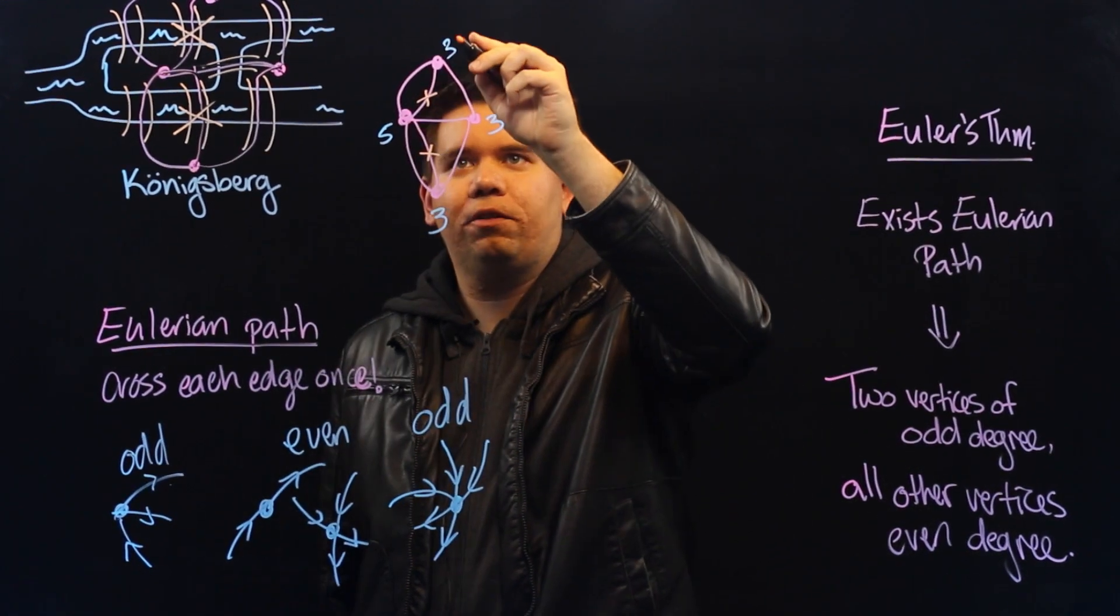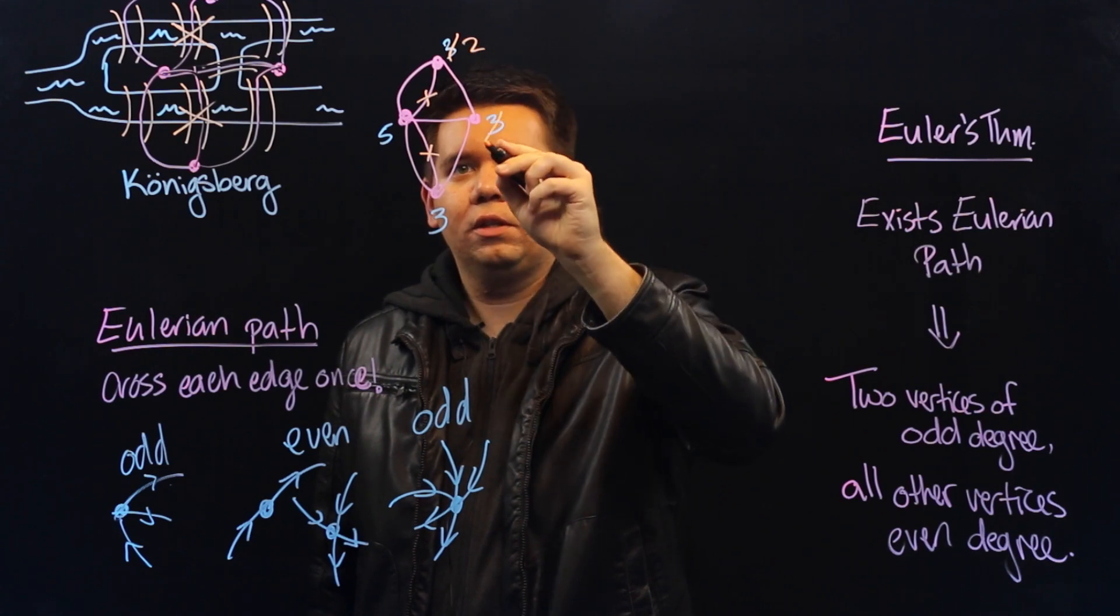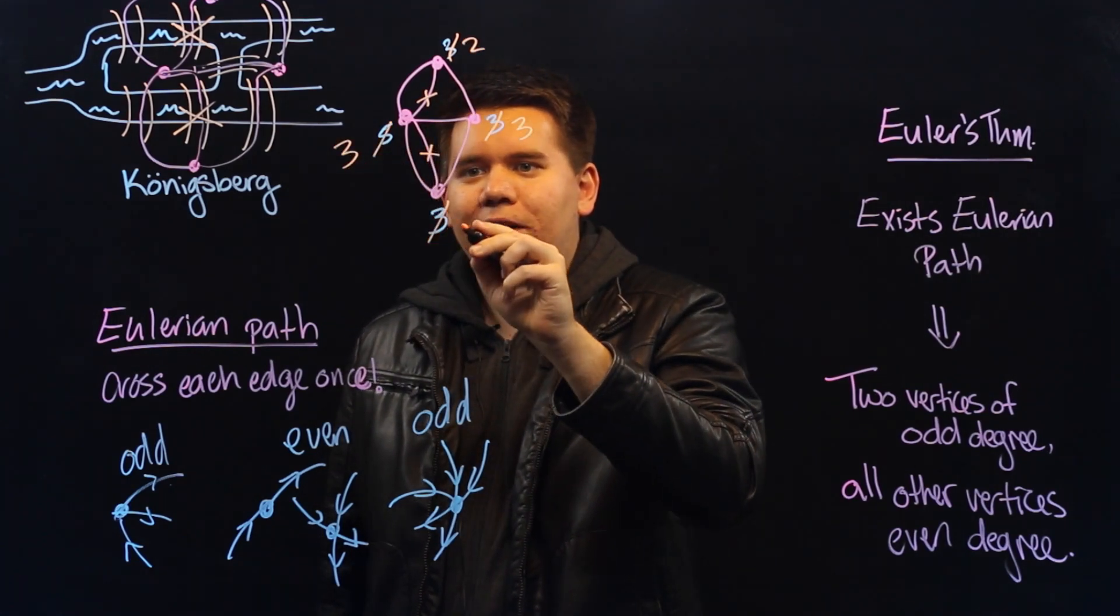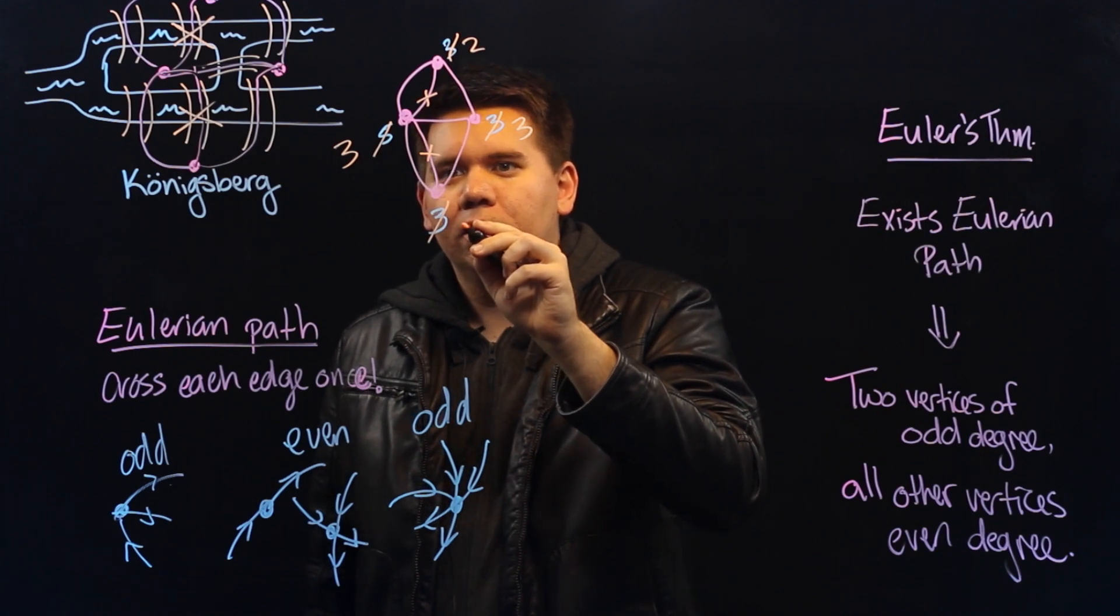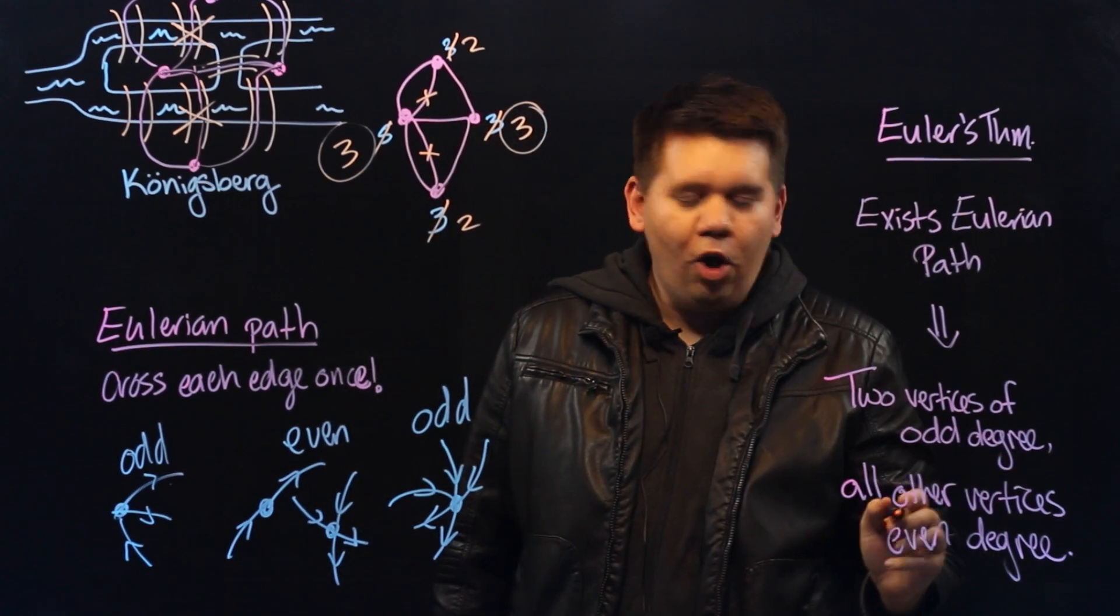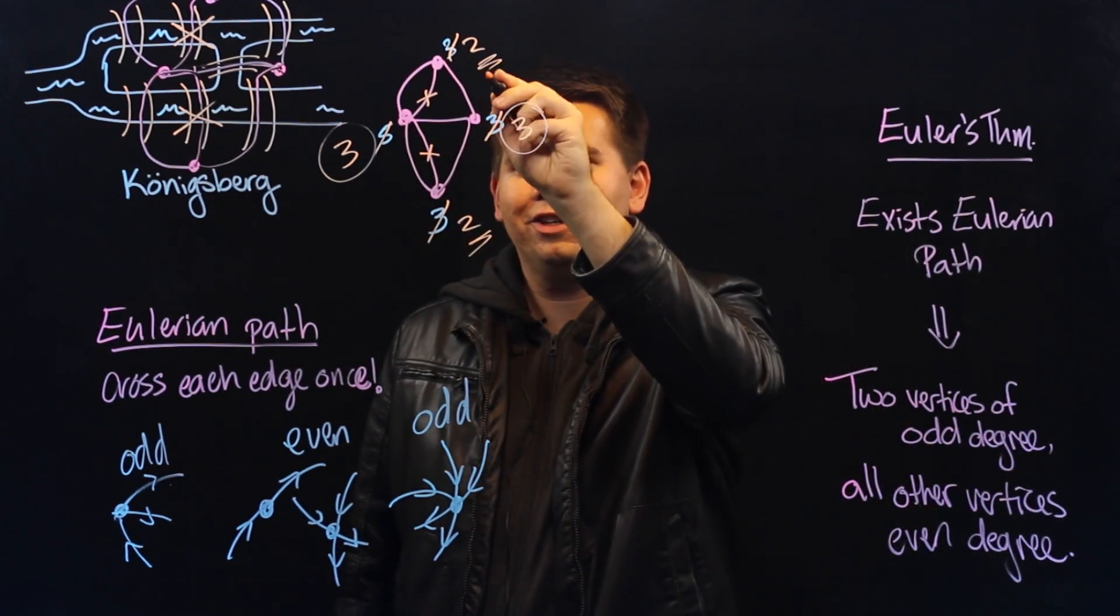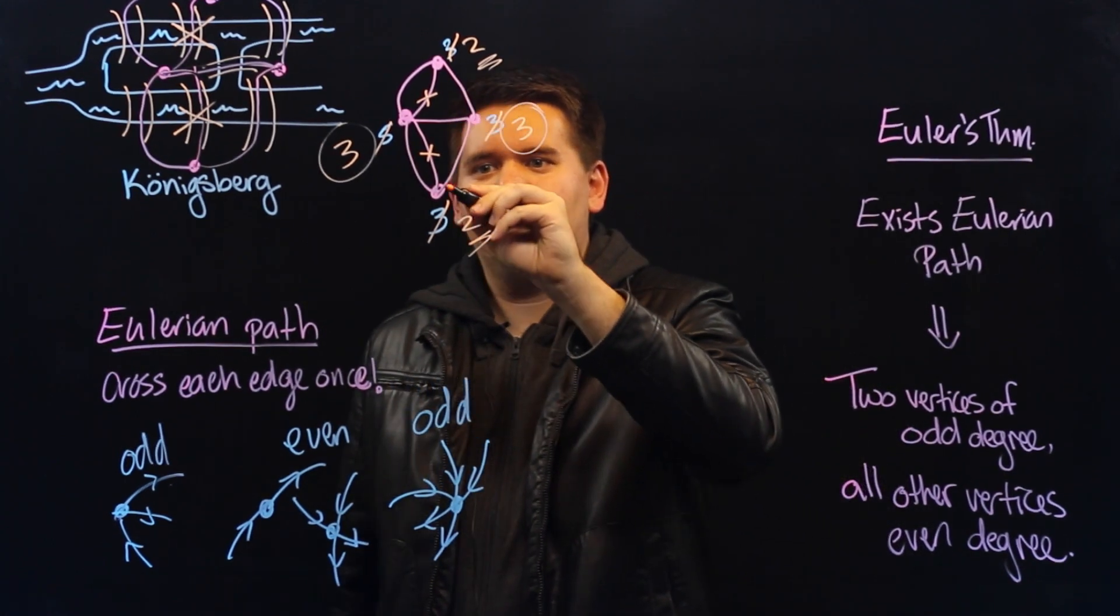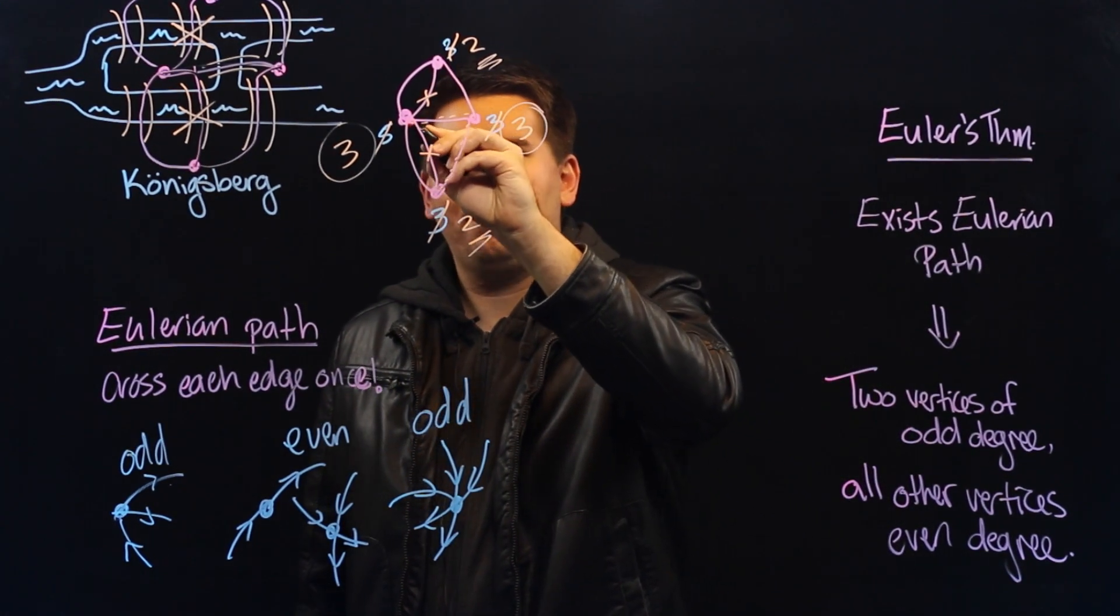Now, we have degree two, degree three, degree three, and degree two. There are two vertices of odd degree, and all the others are even. So present day, you can walk the bridges and create an Eulerian path.